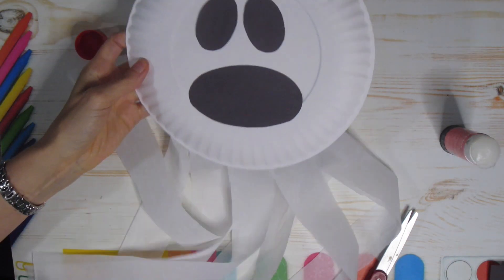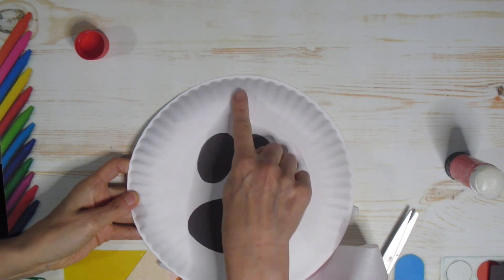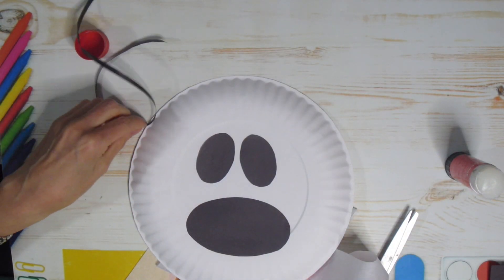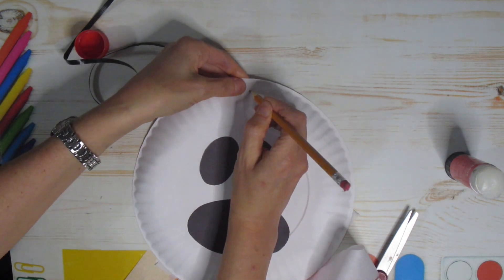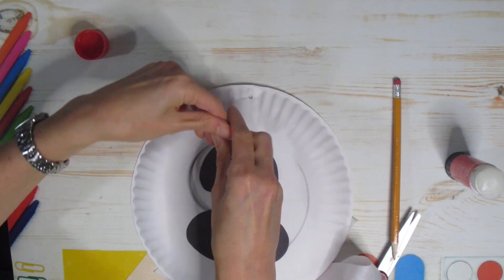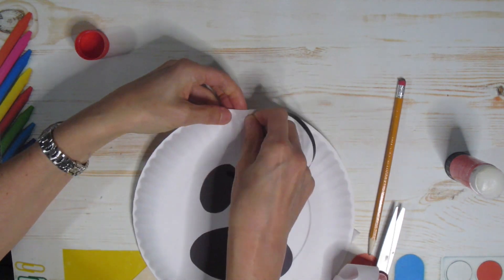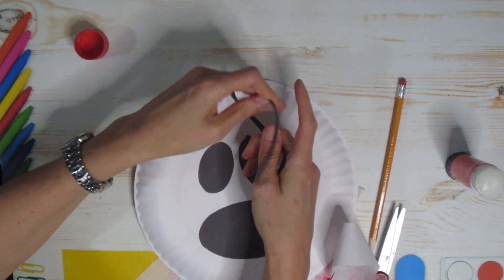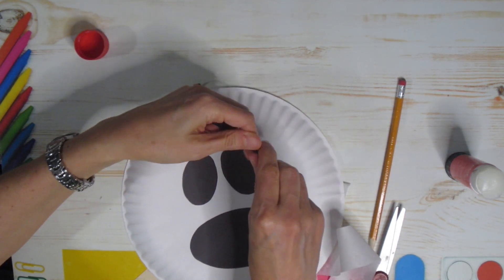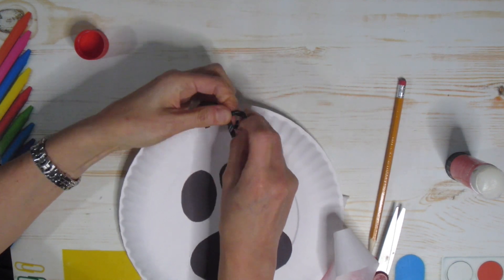Once you're happy with the way that looks you are now going to put a little hole at the top. Now I'm going to use a pencil but you could definitely just use a hole punch. Just be careful with this you might need someone to help you. So I just popped a little hole at the top. I am putting my ribbon through and going to tie a knot. You could use yarn or string for this as well.